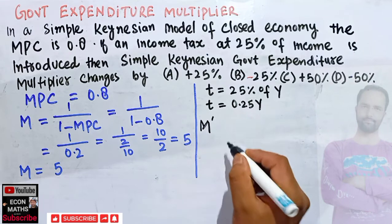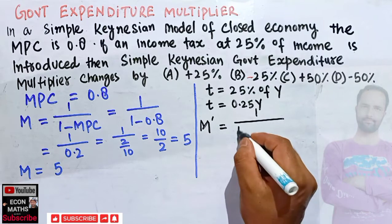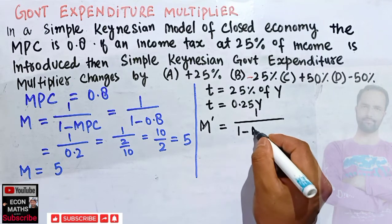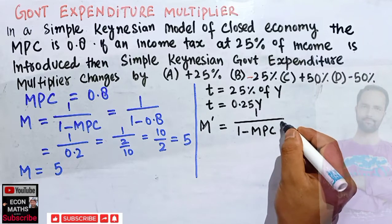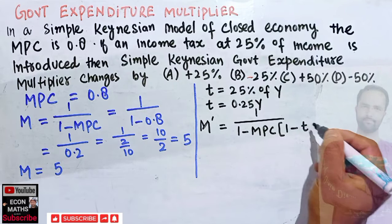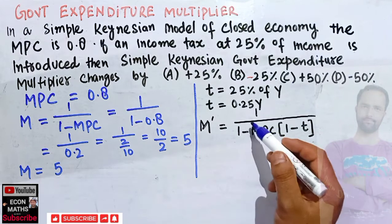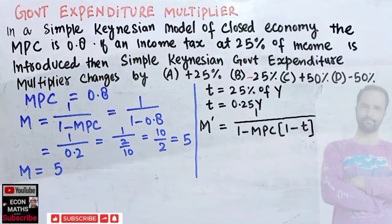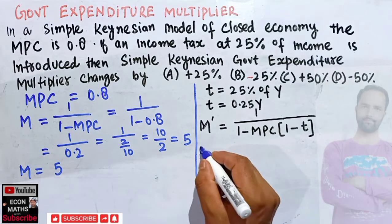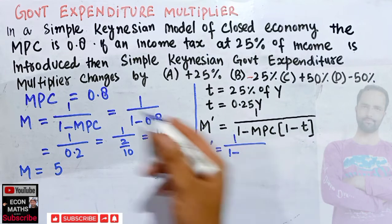The formula for the government expenditure multiplier when a proportional tax rate is imposed becomes: M' = 1 divided by (1 minus MPC times (1 minus tax rate)). This accounts for the proportional tax in the Keynesian framework.